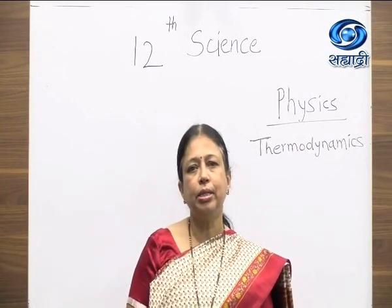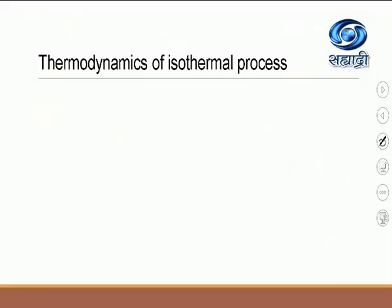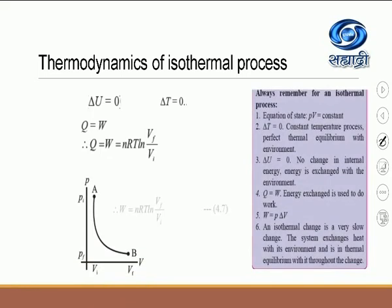Let us continue this by using the smart board. We have seen in the previous lecture about the isothermal process. The isothermal process is a process which is carried out by keeping temperature constant. We have also studied the expression W which is equal to nRT ln(VF divided by VI). The derivation was completed in the previous lecture.